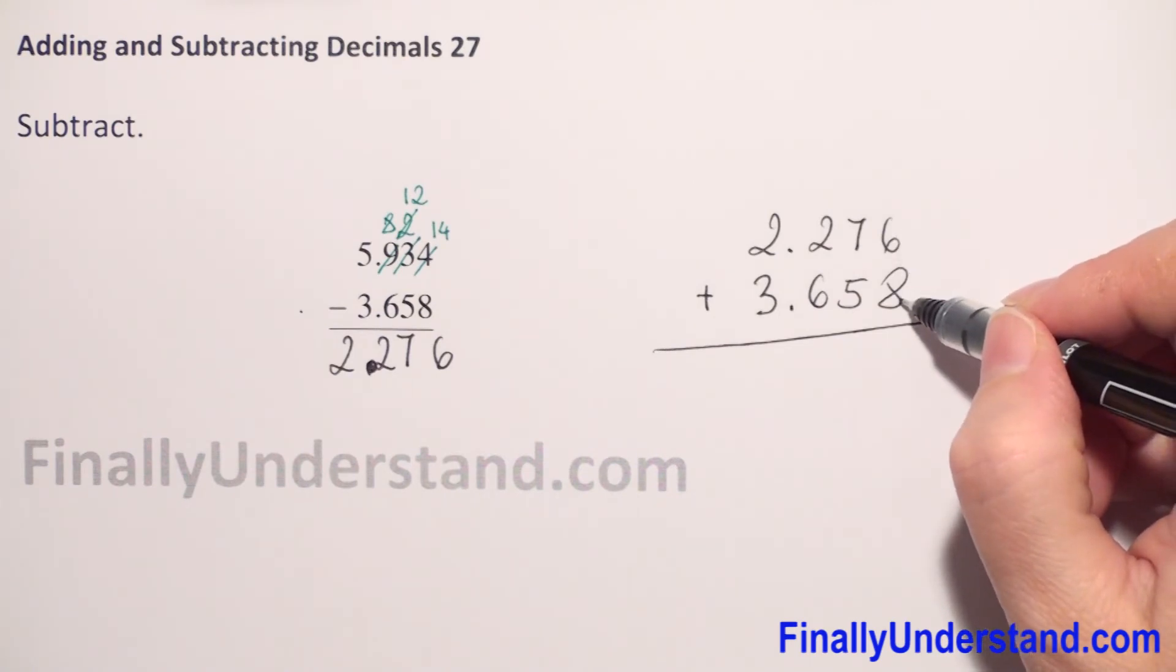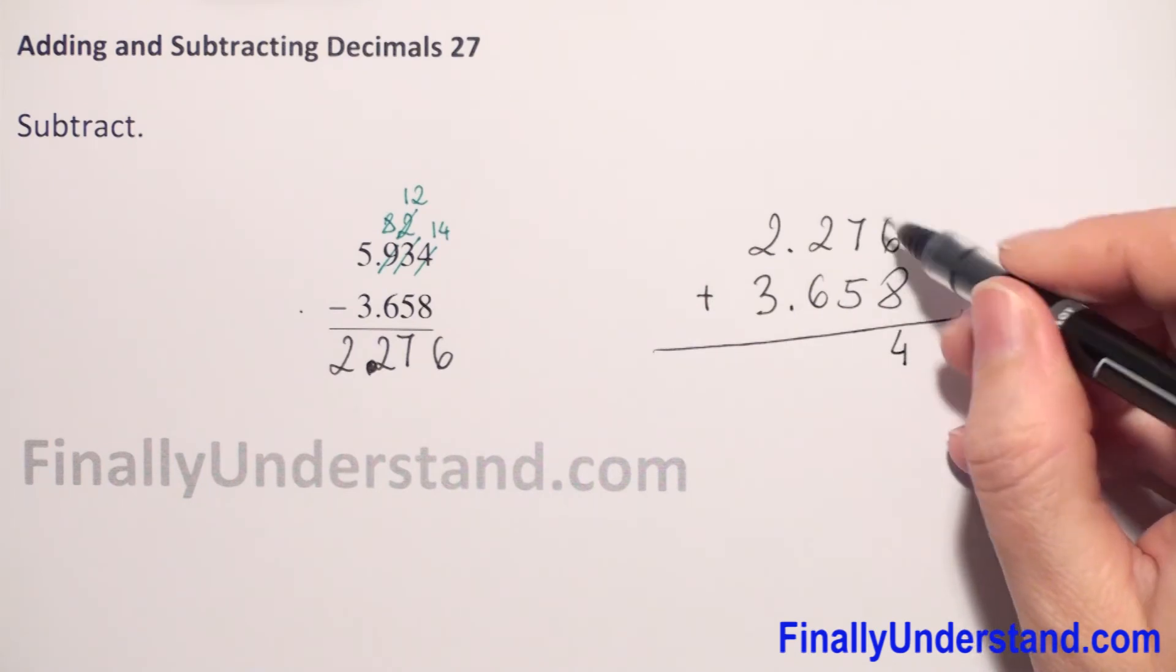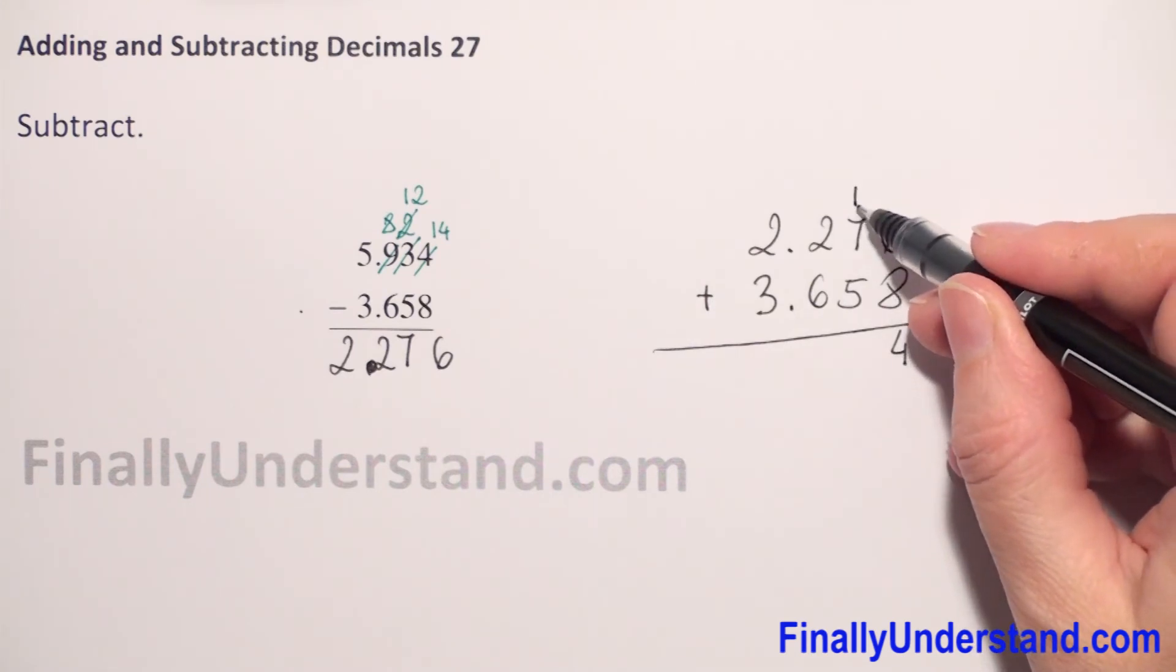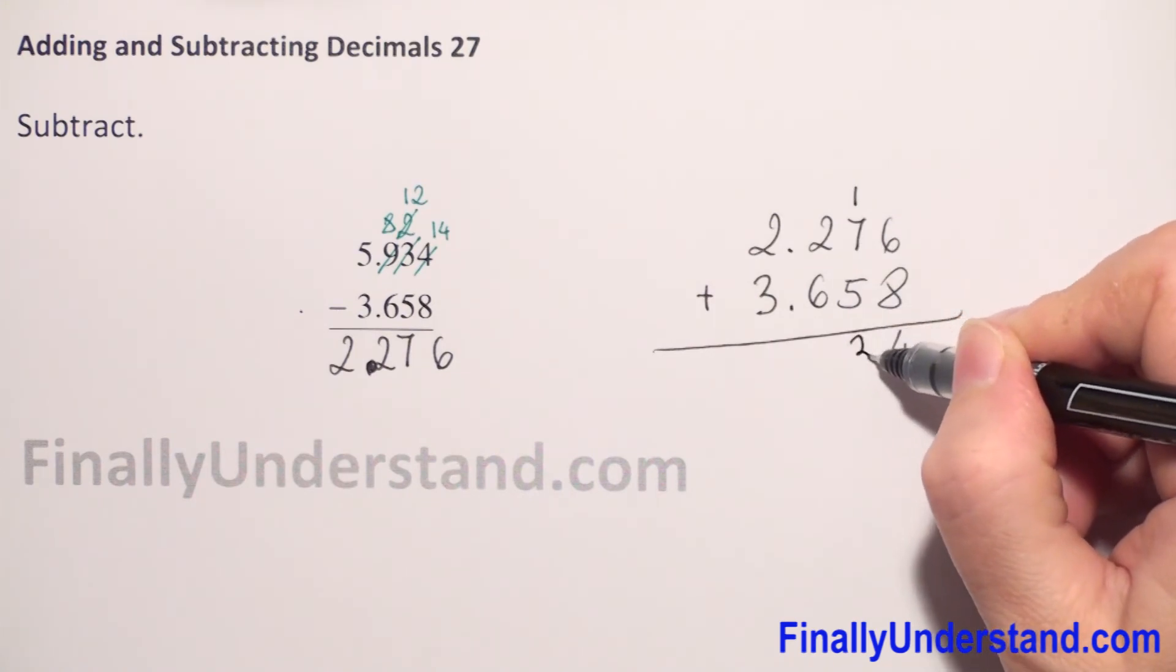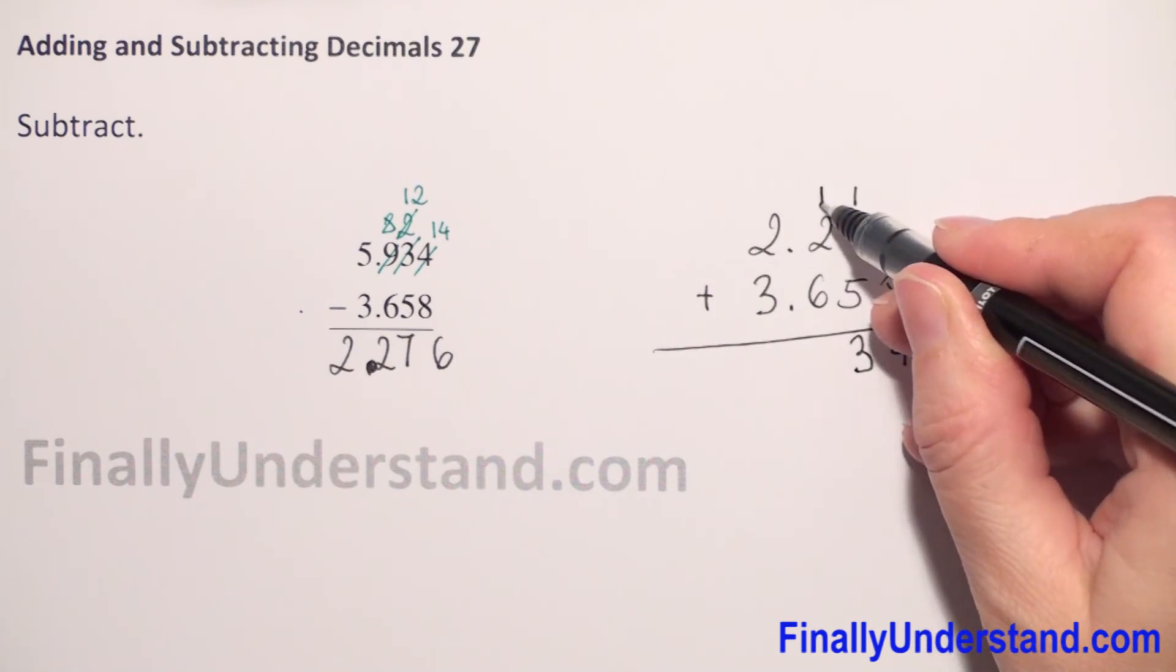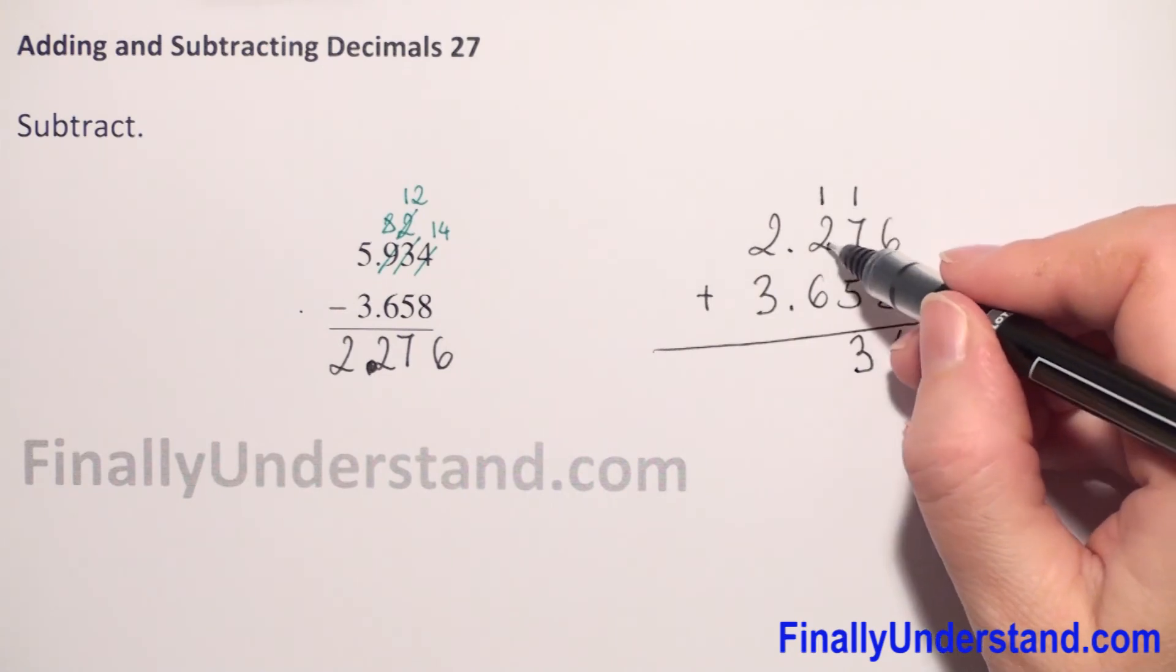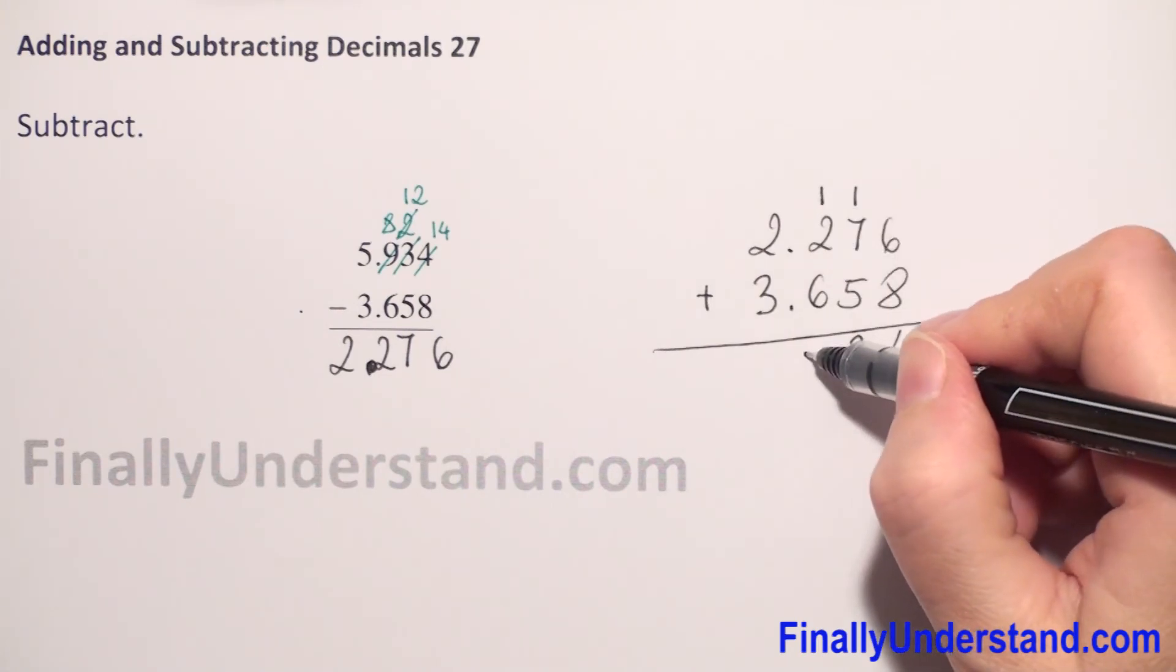6 plus 8 is 14, so we have 4 and we take 1 to the next column. 1 plus 7 is 8, plus 5 is 13, so we have 3 and we take 1 to the next column. 1 plus 2 is 3, plus 6 is 9.